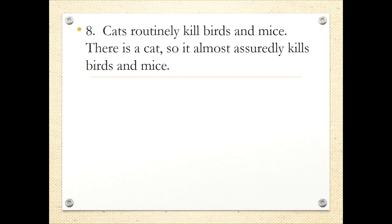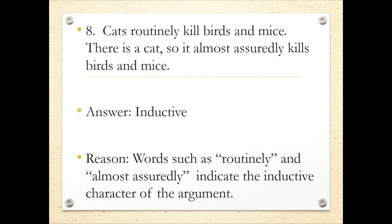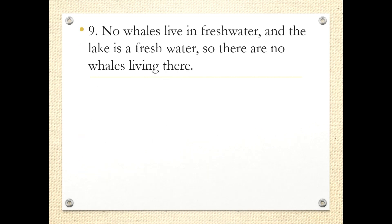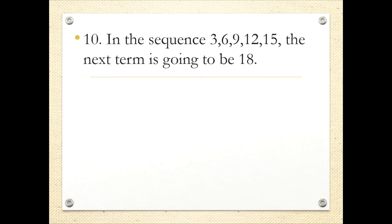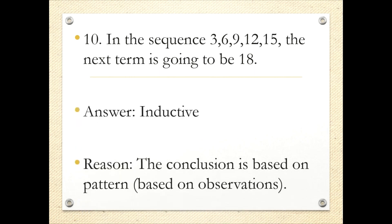Number 8: cats routinely kill birds and mice; there is a cat, so it almost assuredly kills birds and mice. This is inductive. Number 9: no whales live in fresh water, and the lake is fresh water, so there are no whales living there. This is a general sense applied to a specific case — deductive reasoning. Number 10: in the sequence 3, 6, 9, 12, 15, the next term is going to be 18. This is inductive, because the conclusion is based on pattern and observation.